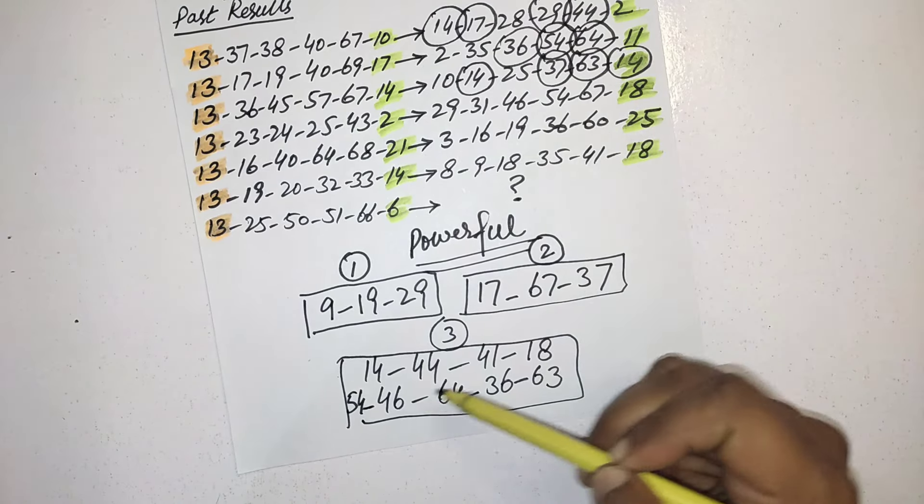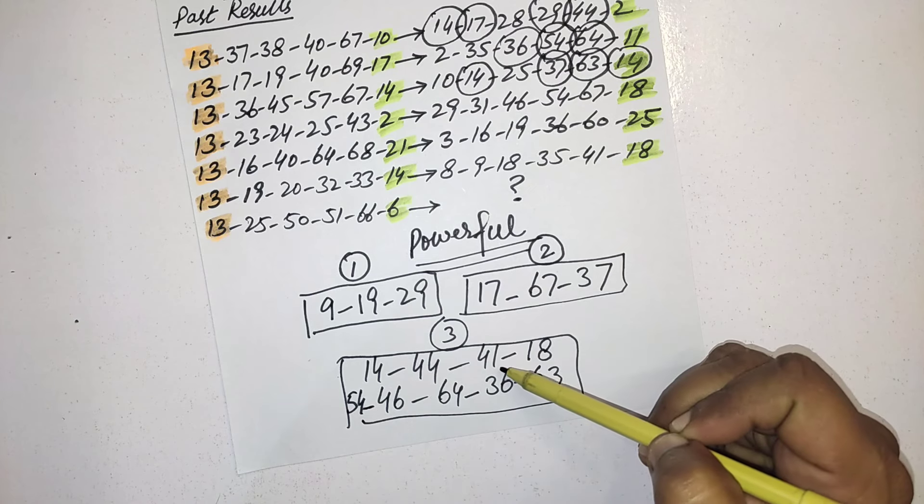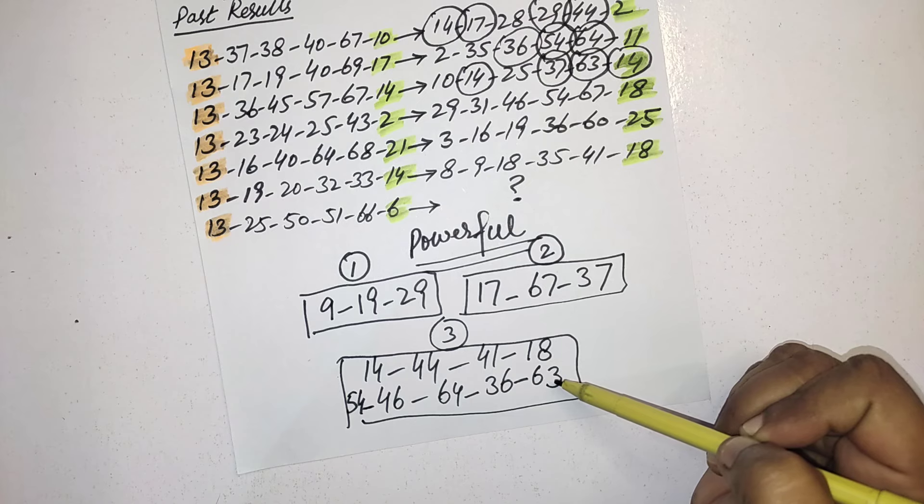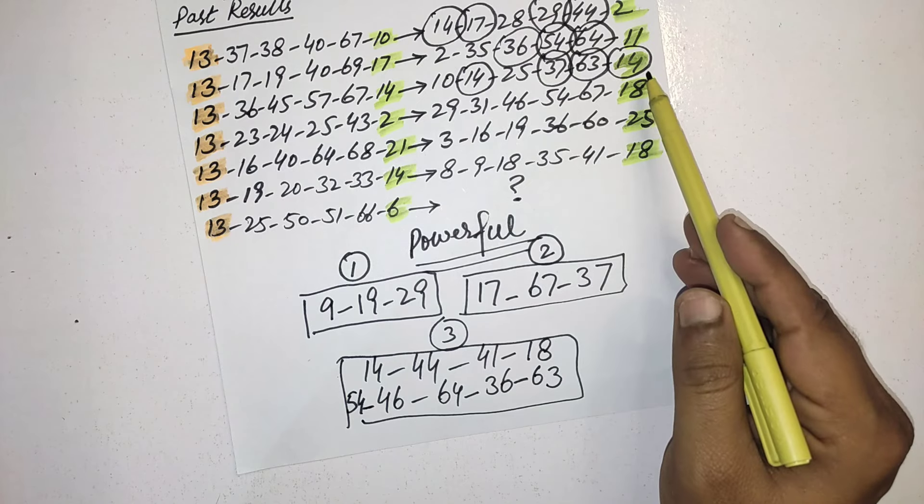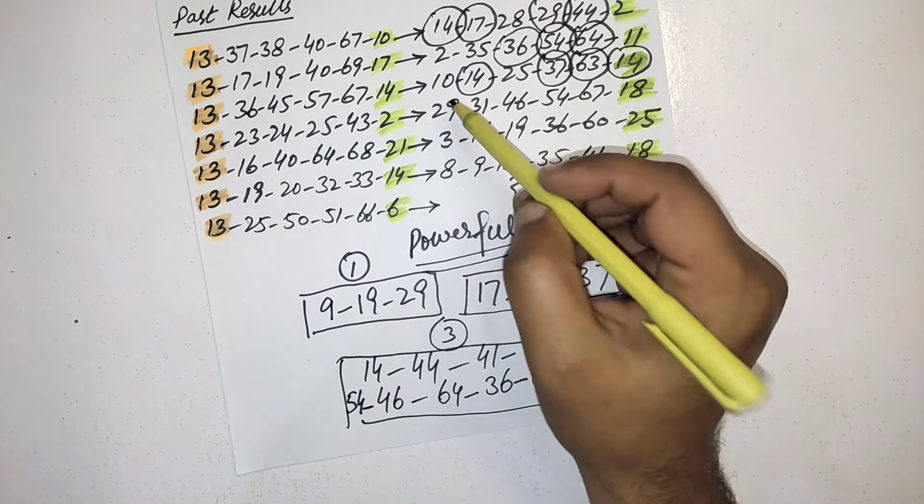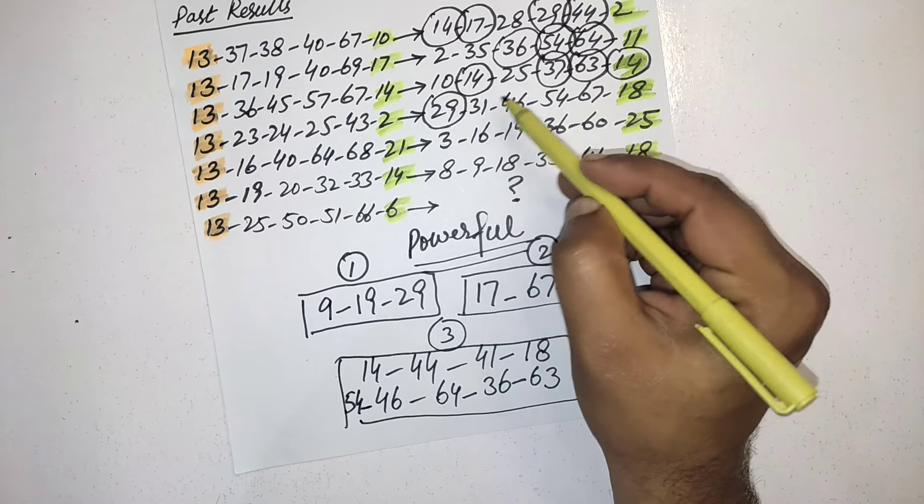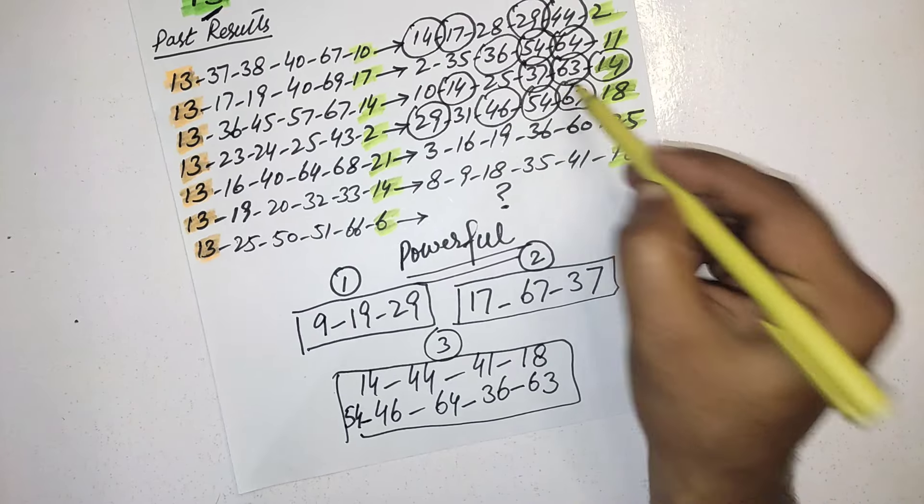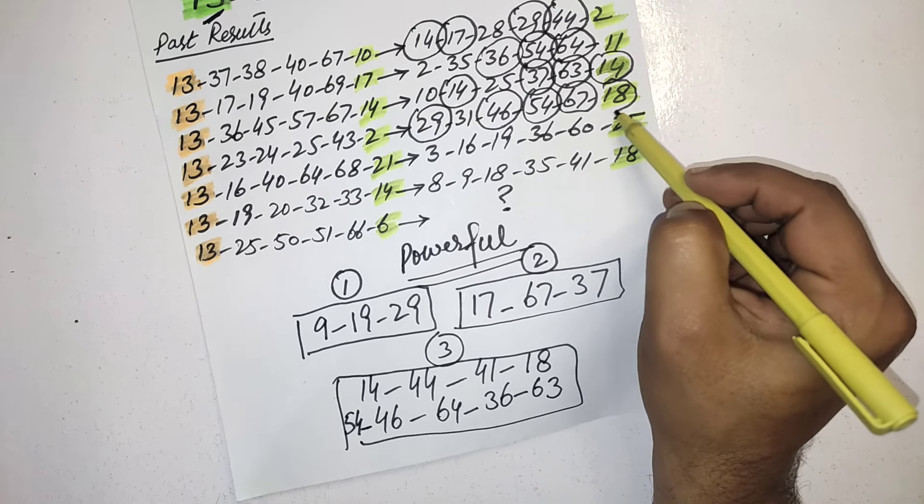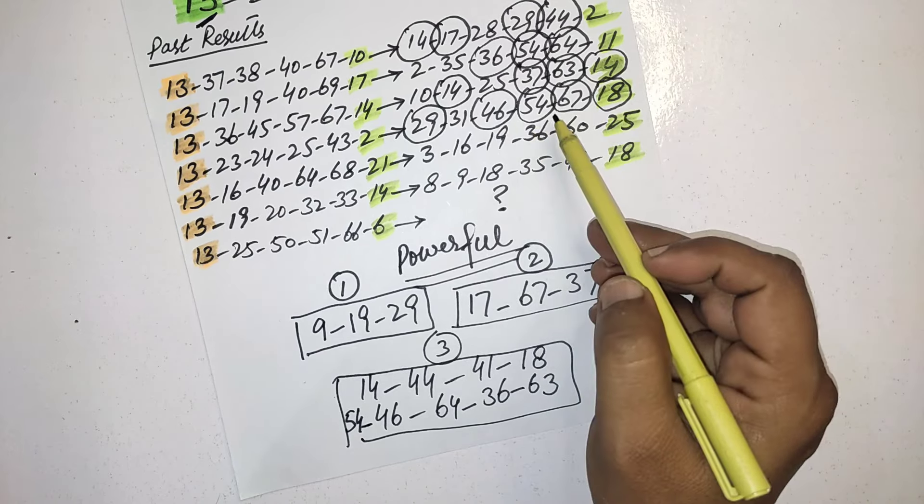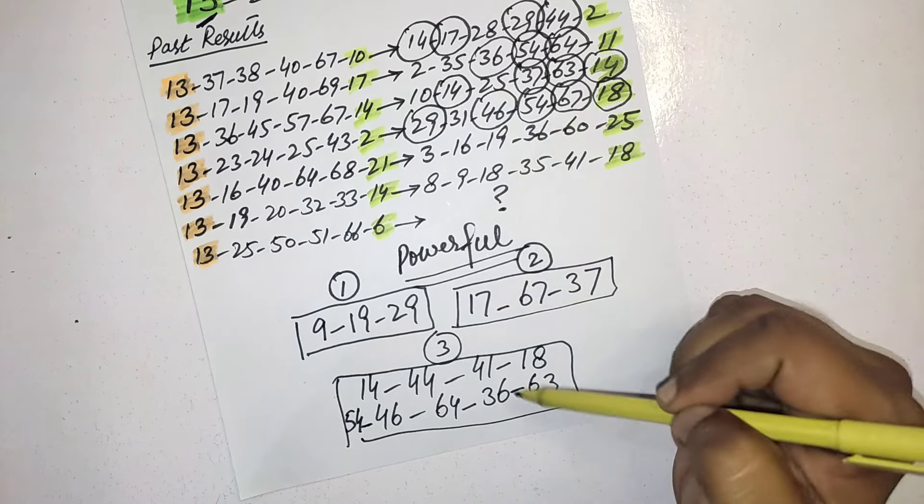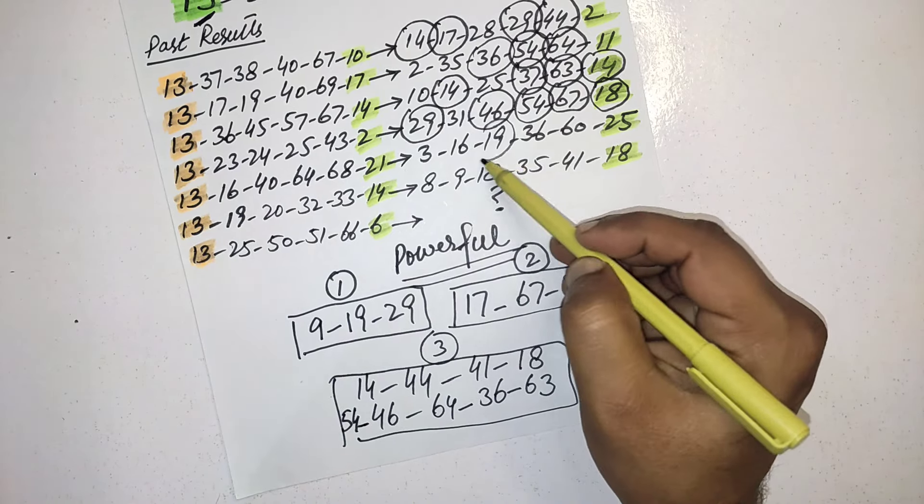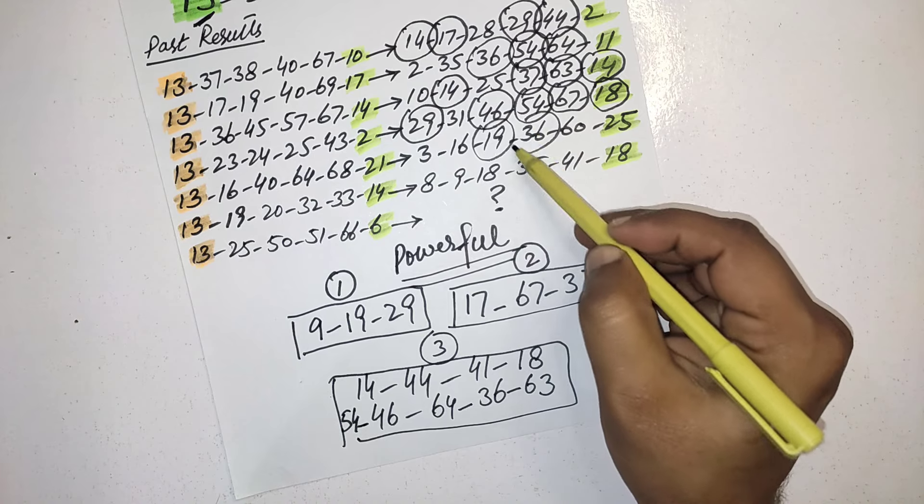The four numbers 14, 37, 63, and megaball is also 14. In next row 29, 46, 54, 67, and 18. Five numbers they picked between these 15 numbers.